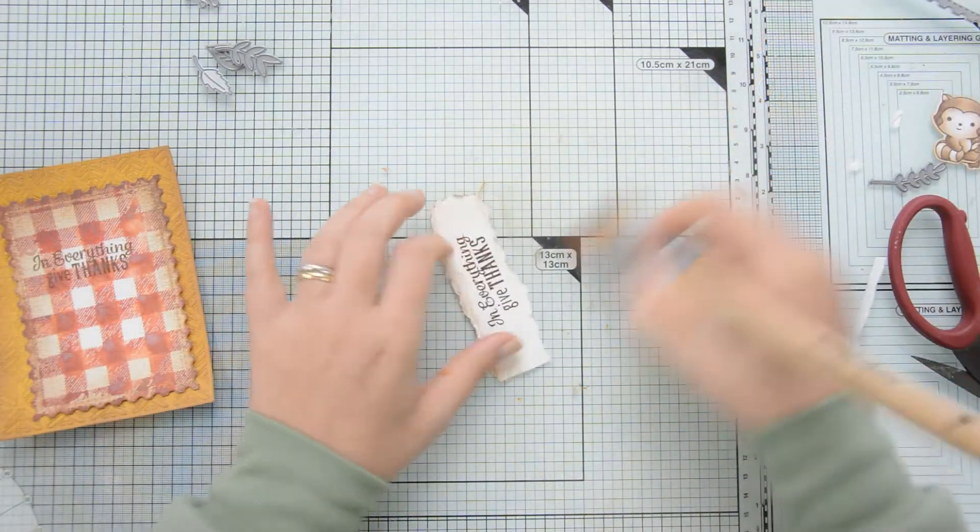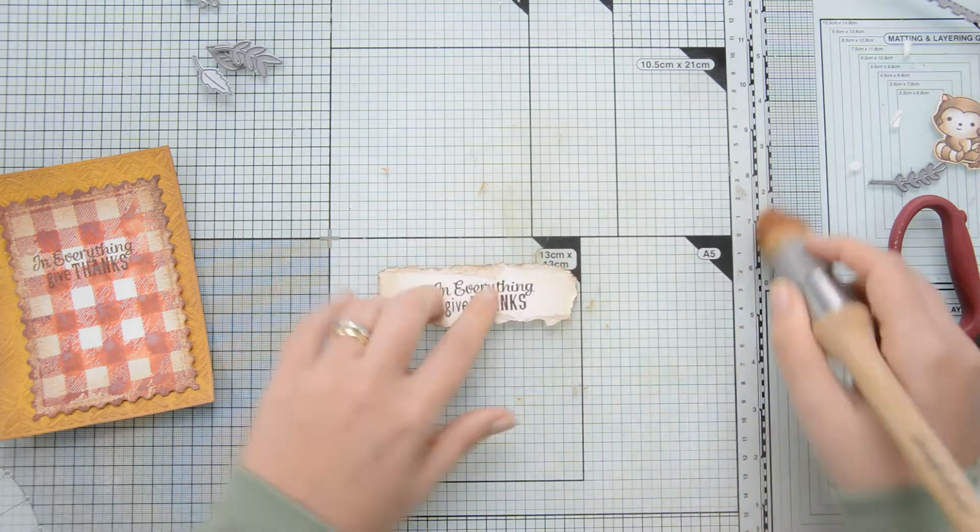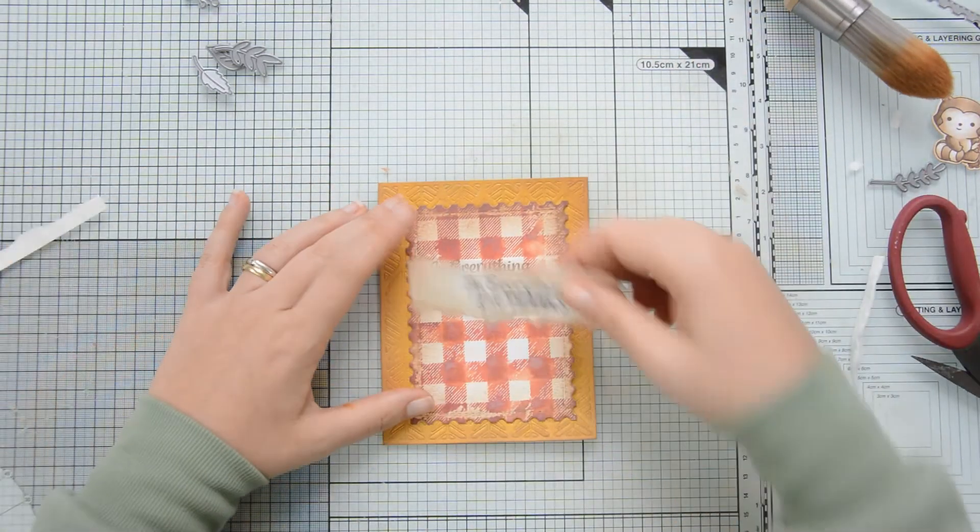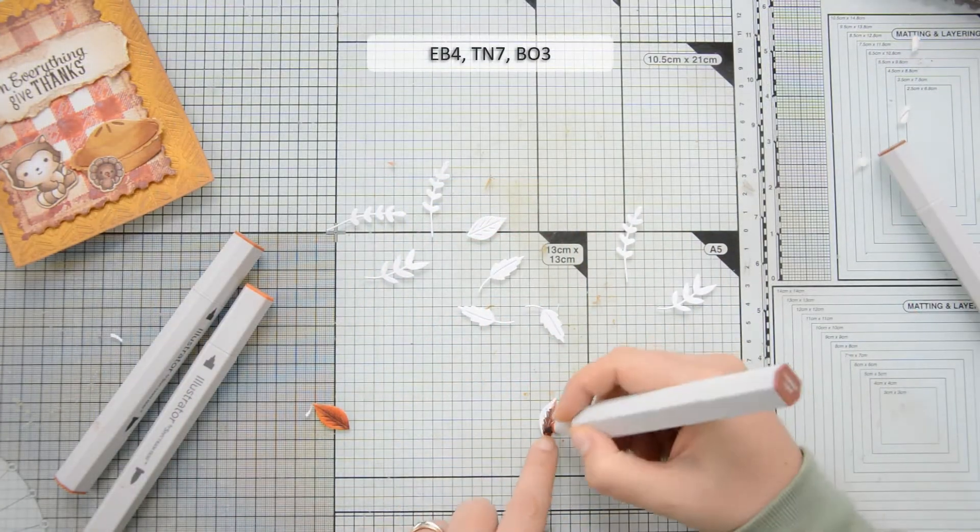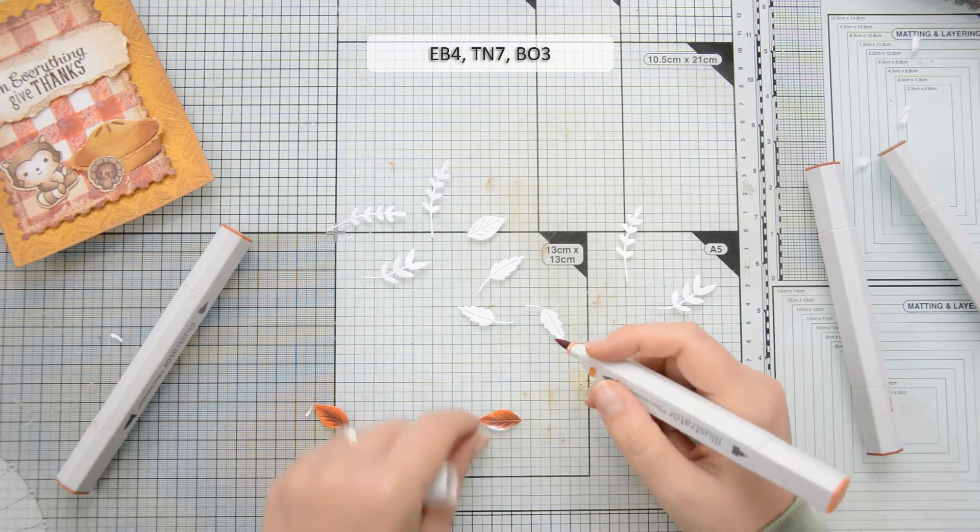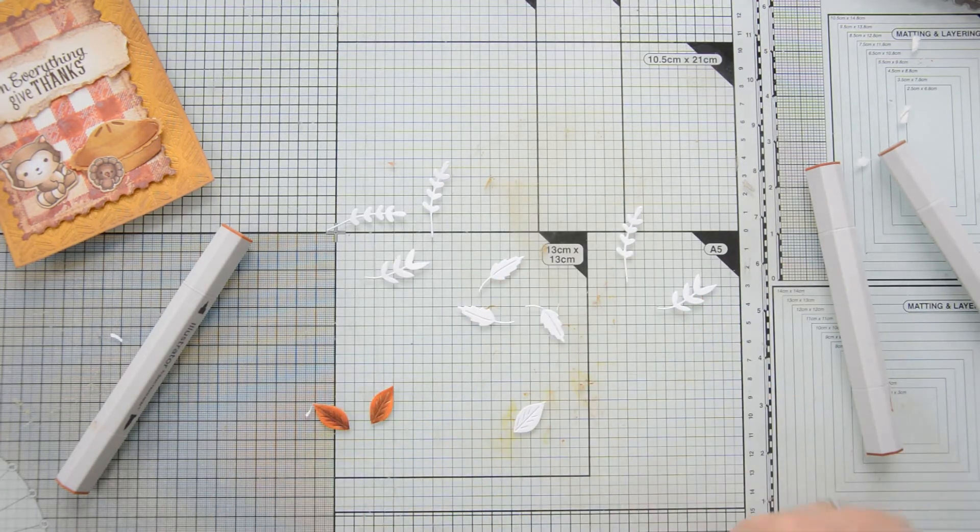I decided to rip the sentiment strip with my hands and again to brush its edges with vintage photo and I have to say that I really love the look. As you see I had tried stamping directly on that checkerboard panel but the sentiment wasn't showing enough so that's why I used this sentiment strip instead.